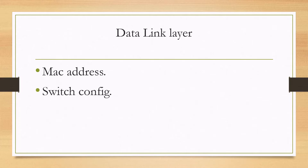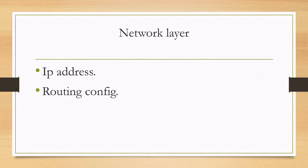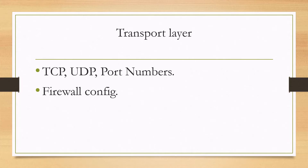The data link layer is where your frames are situated, so this means it's MAC addresses that you work with and switch configuration. The network layer is where the packets are — IP addresses are on this layer along with router configuration. The transport layer is where all the transport happens and is what you define in your firewall configuration, so it's TCP, UDP, and port numbers for things you would like to access or not access.